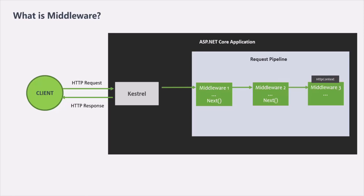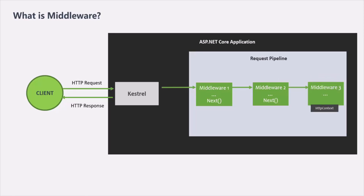The last middleware returns the request back to the previous middleware, effectively terminating the request pipeline. Each middleware in the sequence gets a second chance to inspect the request and modify the response on its way back. So from middleware 3, the HTTP context object is passed back to middleware 2. In middleware 2, if we want to further manipulate the request or response, we can do that.